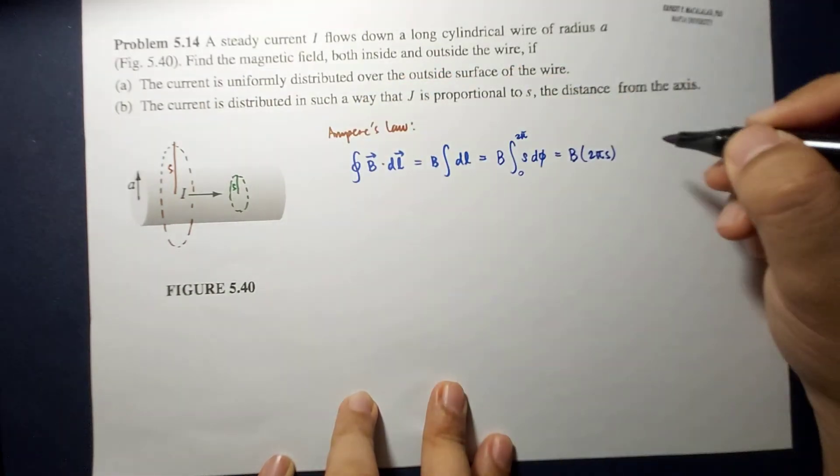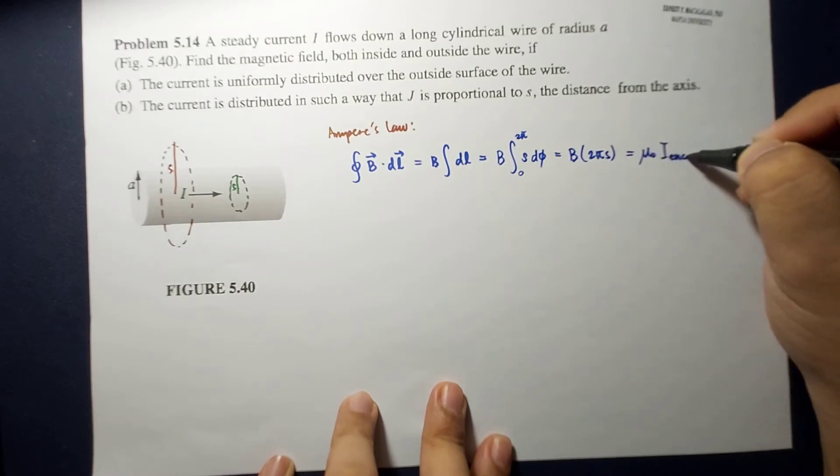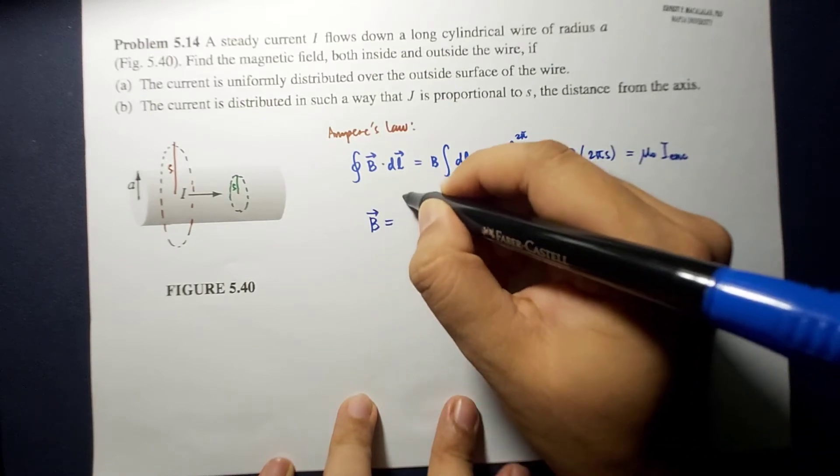Ampere's law states that this is equal to mu naught times I enclosed. And therefore, we can summarize B as follows.